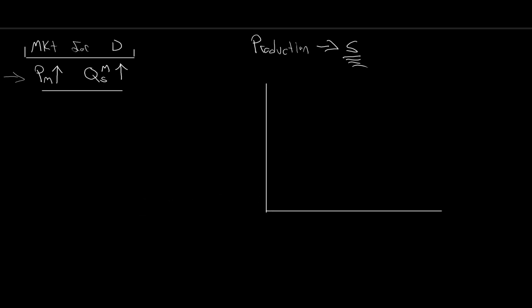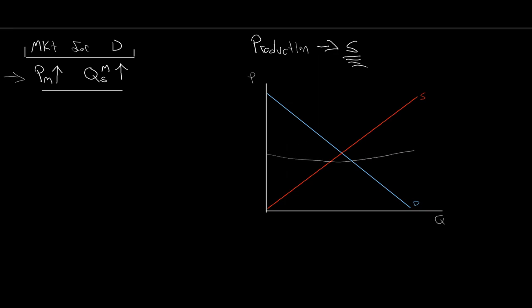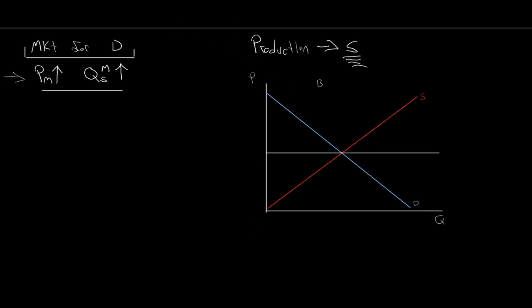Let's take a look at price and quantity. We'll get our demand curve downward sloping and our supply curve upward sloping — supply and demand. Initially, we just have a fixed equilibrium price for donuts. That is the market for donuts.